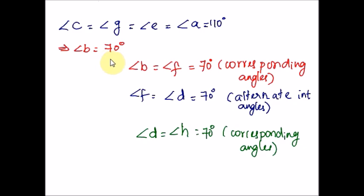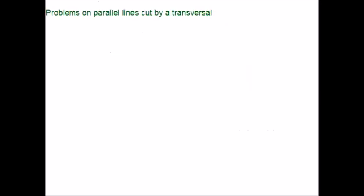We have found all the missing angles in the figure. All you need to do is find the relationship between the angles, state what type of relation they share, and then using the property of that relationship determine whether they are equal or if you need to do any calculation. This topic is going to be very simple for you.